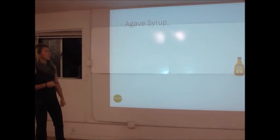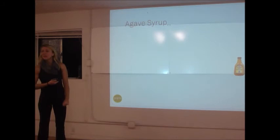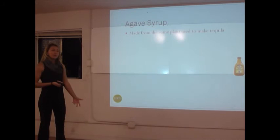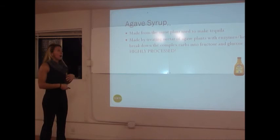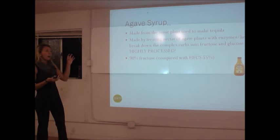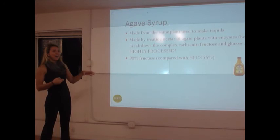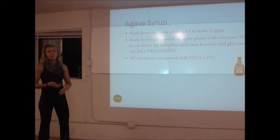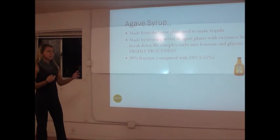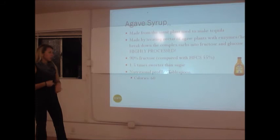Agave syrup is one a lot of people are leaning toward, but I would caution you. Although it comes from the same plant used to make tequila and seems natural, it is highly processed — there are a huge number of steps to make agave syrup. While it comes from a plant, there are none of the vitamins, minerals, or antioxidants found in honey and maple syrup. It's 90% fructose, and a concentrated overload of fructose can lead to fatty liver. People criticize high-fructose corn syrup, but agave has more fructose than that.